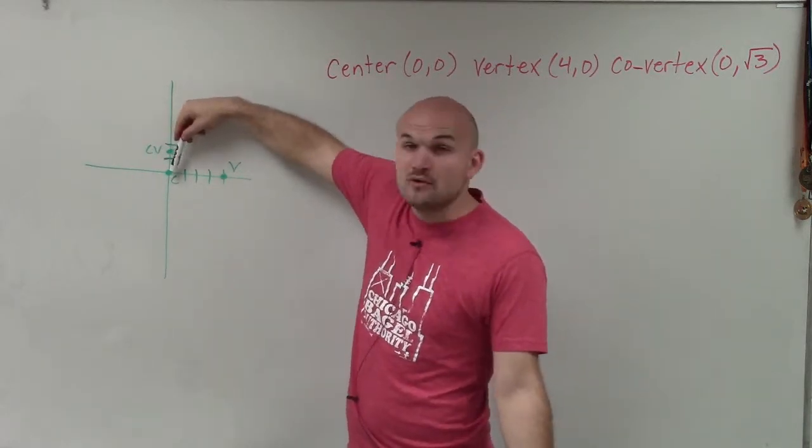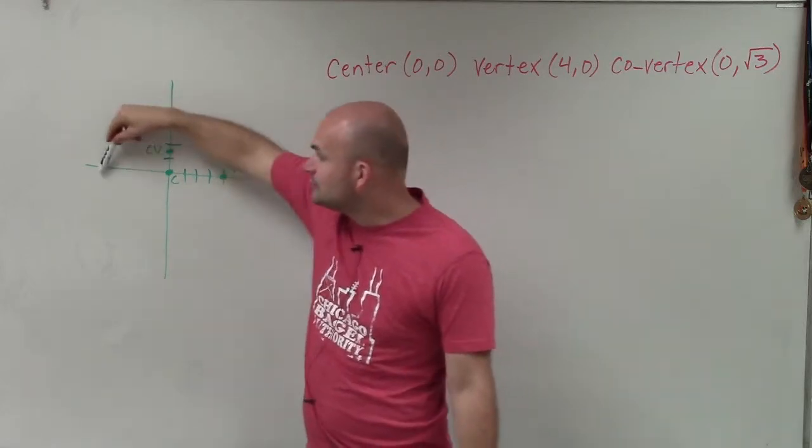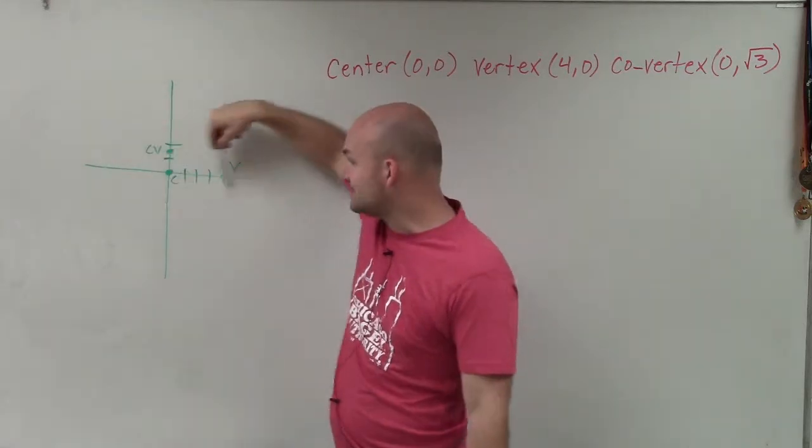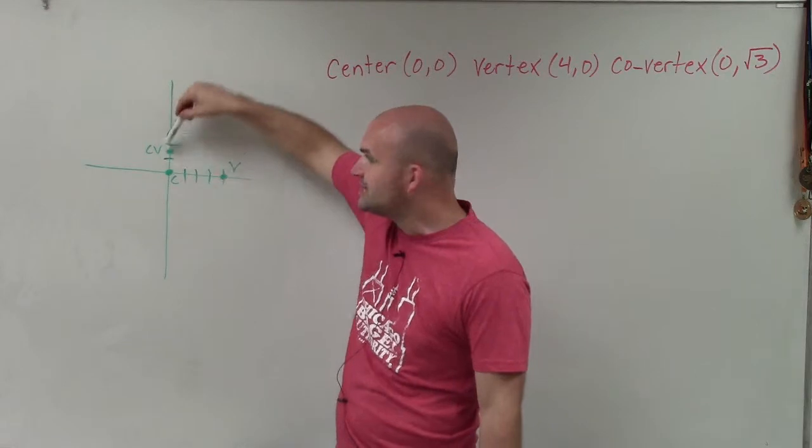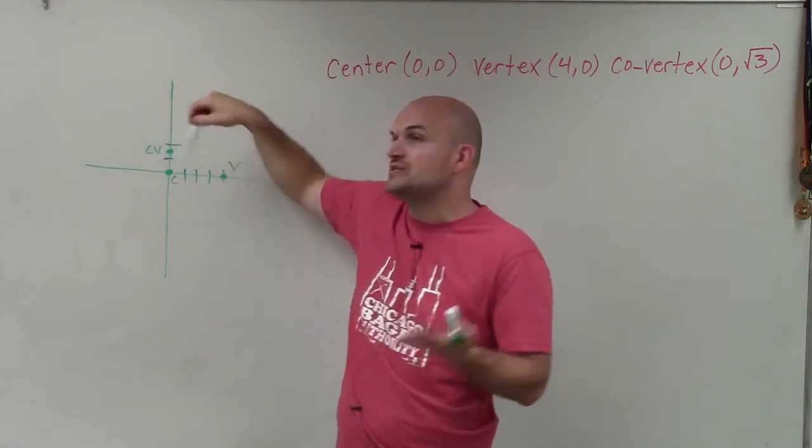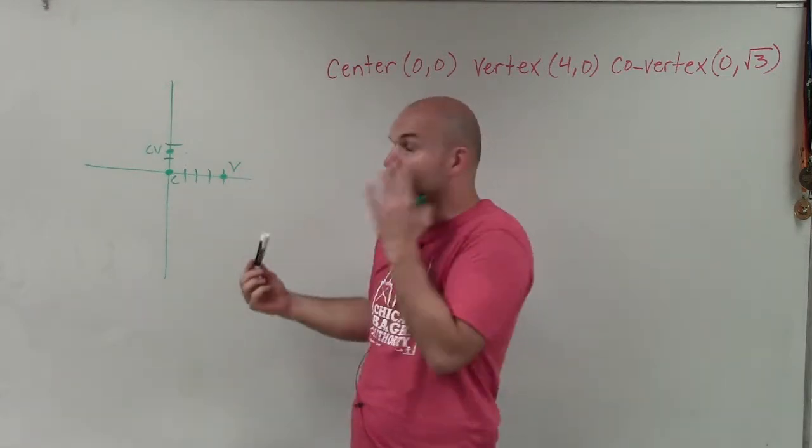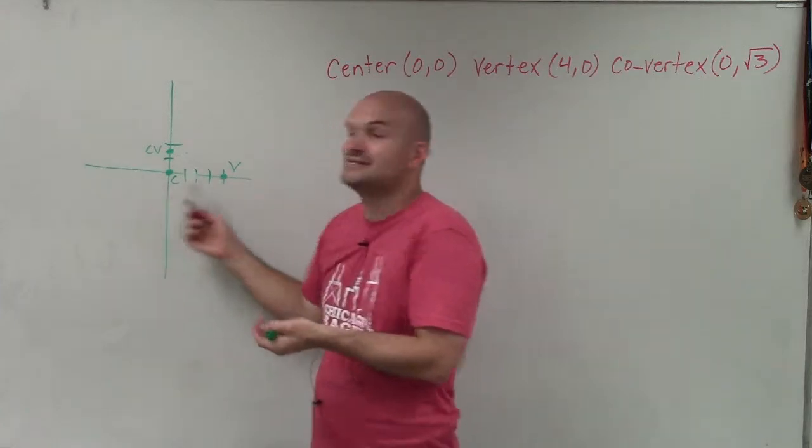Therefore, my foci will lie on this as well, because this is going to be my major axis. It can't be vertical because that would connect the center and the co-vertex, which lie on the minor axis. The major axis is horizontal.